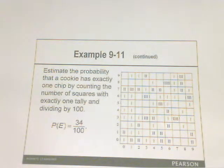So in other words, the probability that the cookie would contain exactly one chocolate chip would be 34 out of 100.